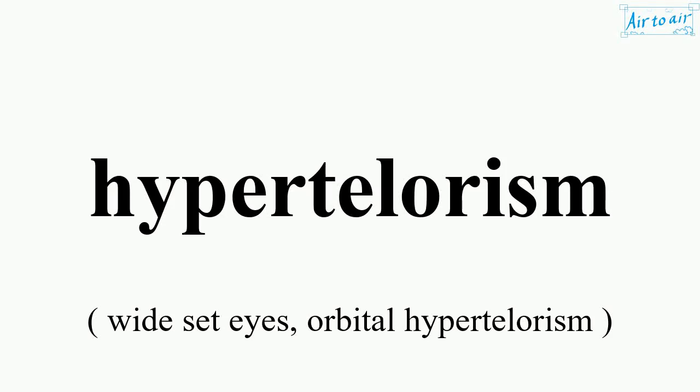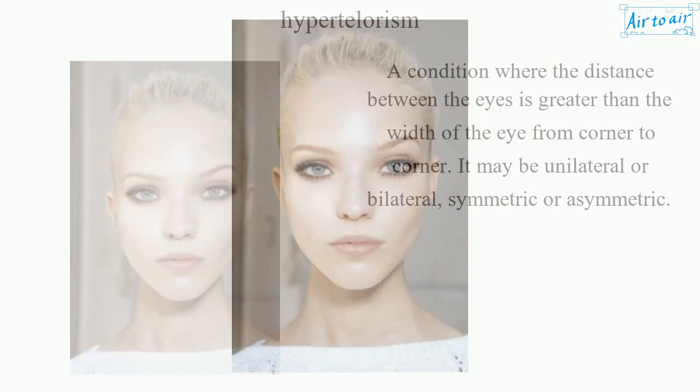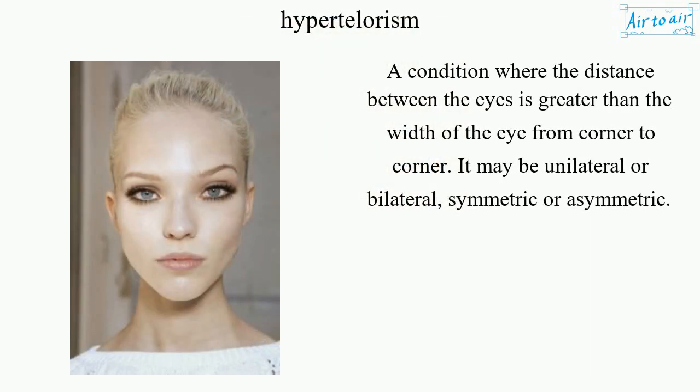Hypertelorism is a condition where the distance between the eyes is greater than the width of the eye from corner to corner. It may be unilateral or bilateral, symmetric or asymmetric.